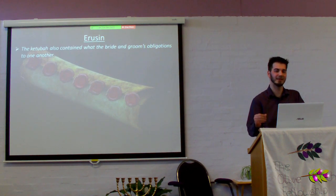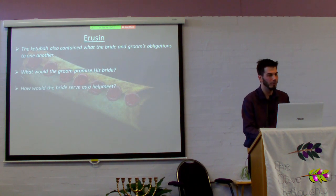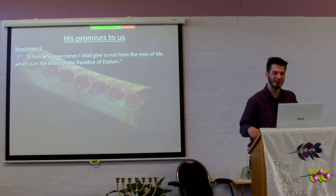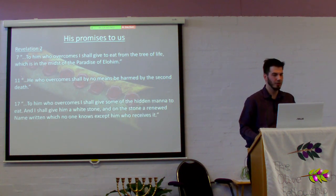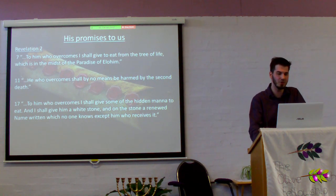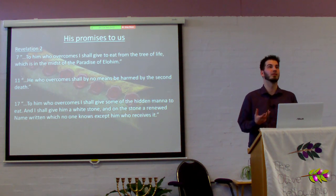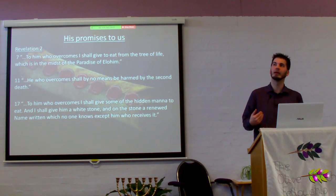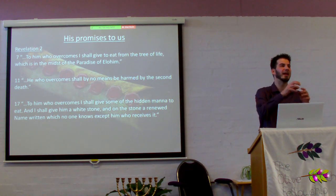The Ketubah also contains what the bride and groom's obligations are to one another — all the stipulations. What would the groom promise his bride? What would we do to serve our groom? These are his promises to us from the seven churches in Revelation: to eat from the tree of life, to not be harmed by the second death, to receive hidden manna and a white stone with a renewed name. Regarding the white stone — in Roman culture it gave you access to certain places others couldn't enter; in Greek culture it meant you'd been acquitted of a crime and given a white stone with your name on it. Both of these factor into our spiritual walk.